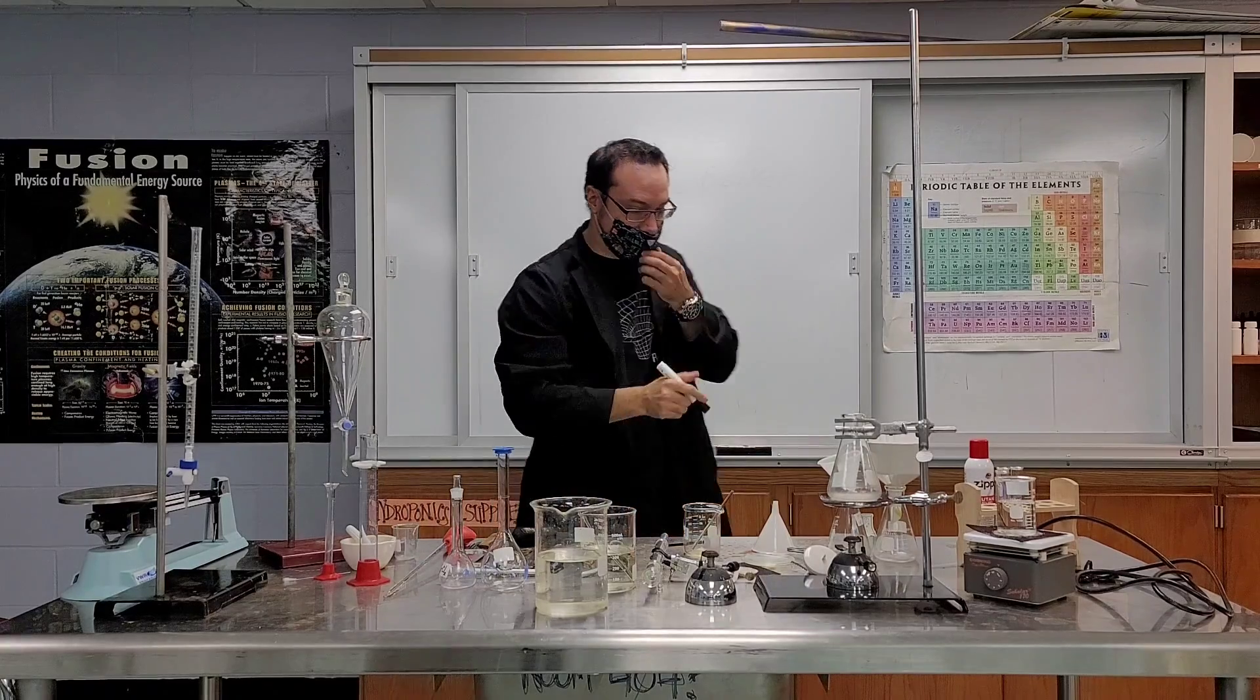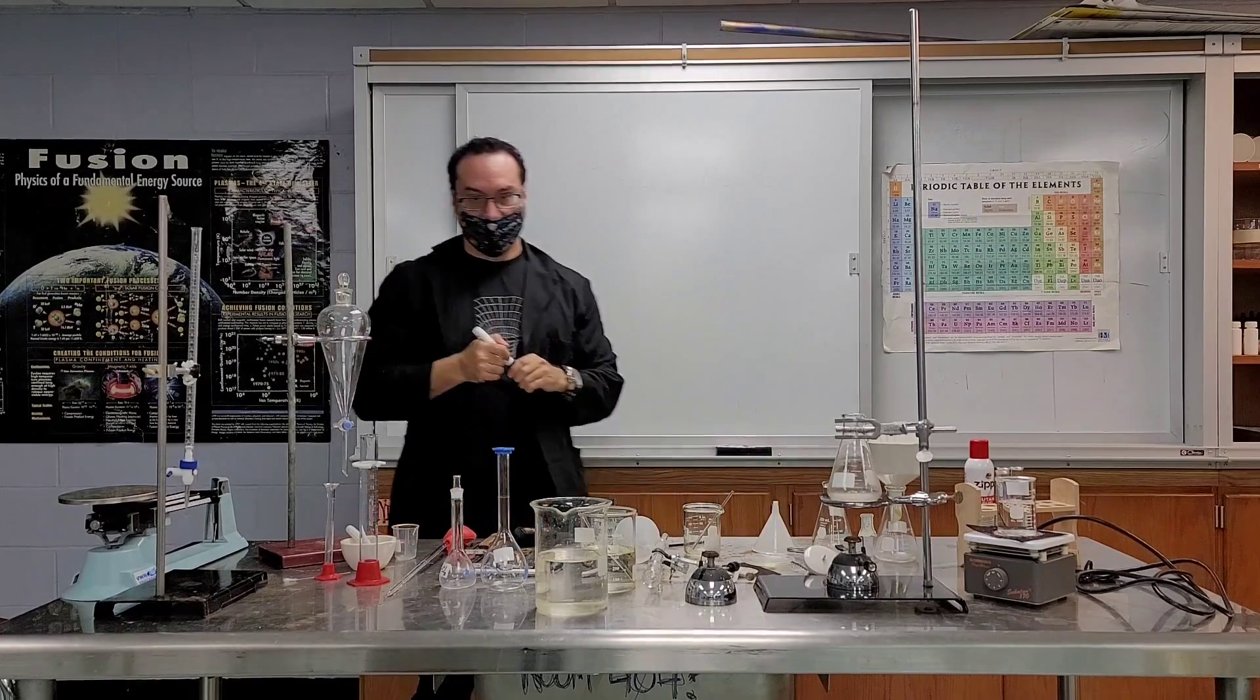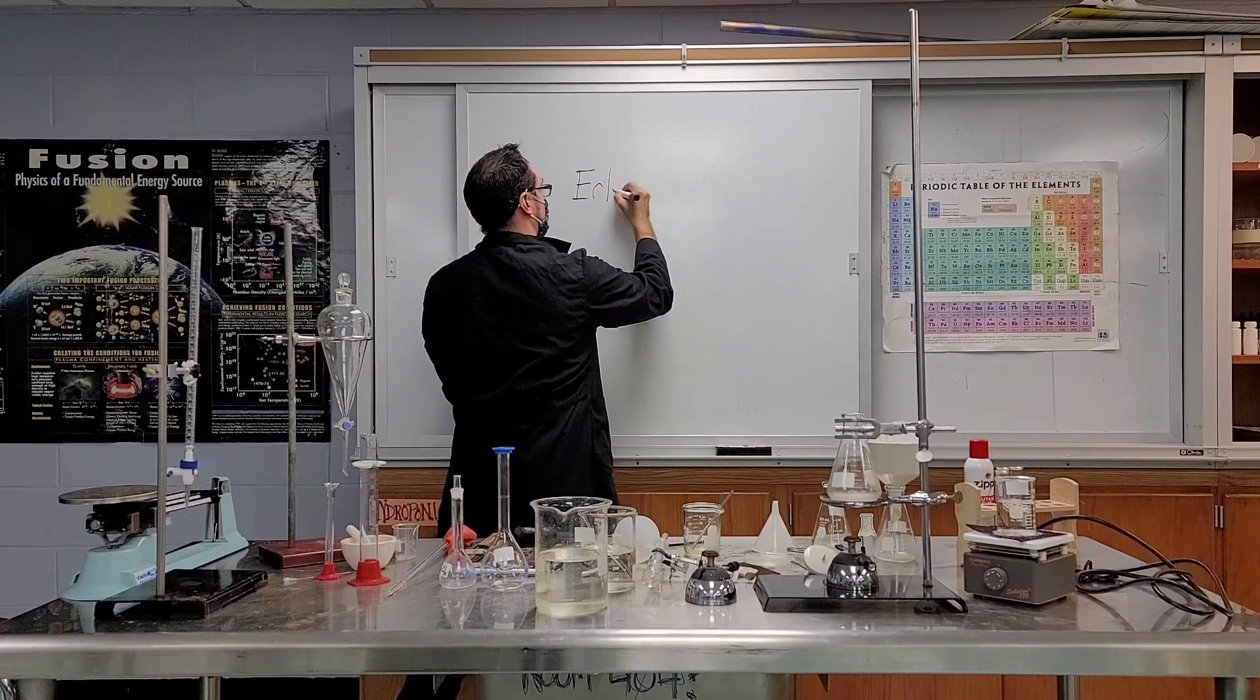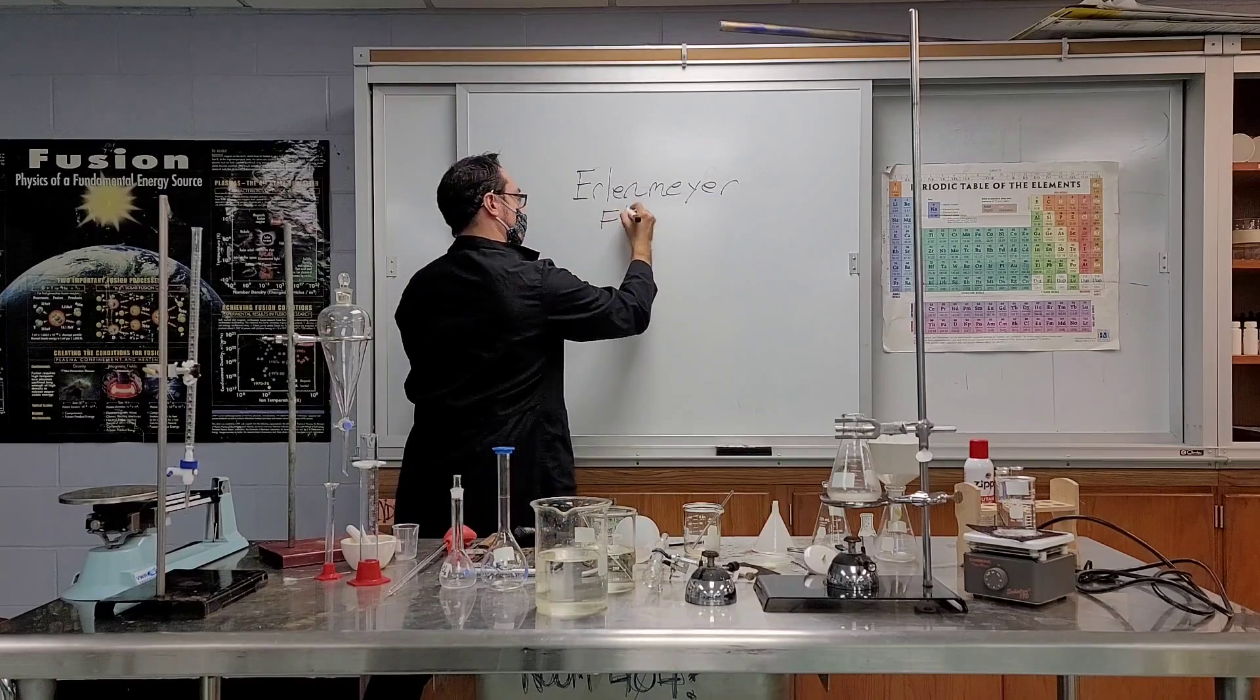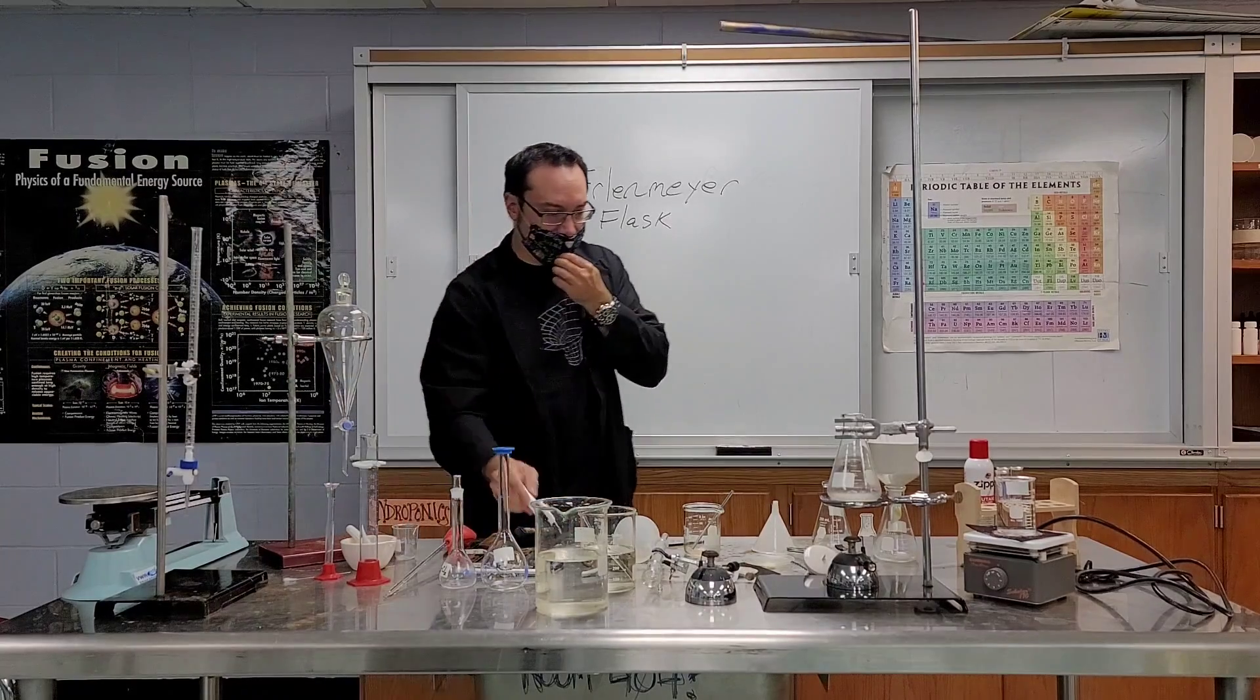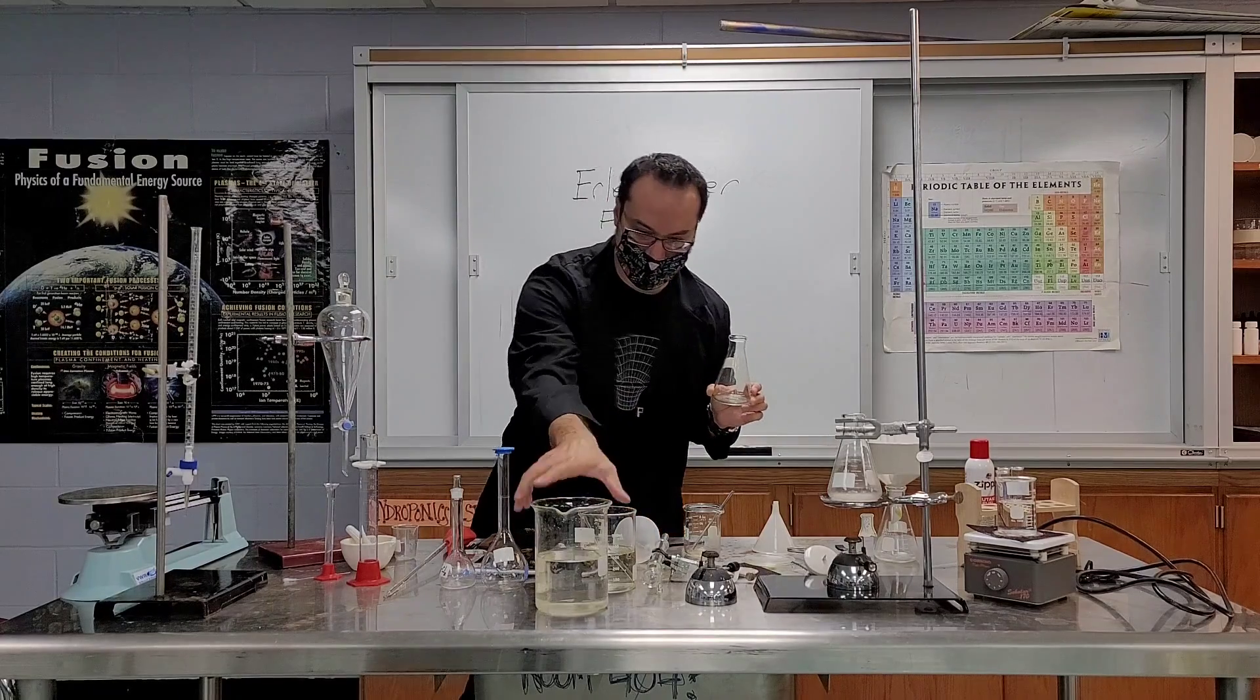These guys, these that look kind of triangular in shape, or funnel shaped, these are called Erlenmeyer flasks. Erlenmeyer flask. Did I spell that correctly? Yes. Okay, so Erlenmeyer flasks, they don't look that different from a beaker, but there is a big difference. I'll show you.